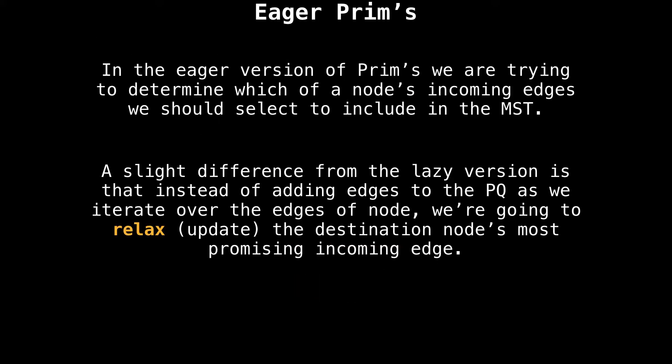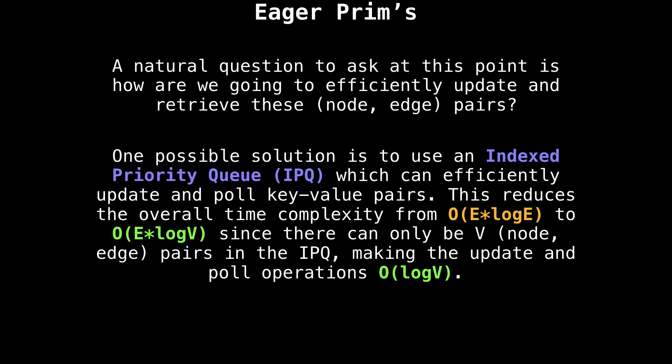In the eager version, we are trying to determine which of a node's incoming edges we should select to include in the MST. The main difference from the lazy version is that instead of adding edges to a priority queue as we iterate over the edges of a node, we're going to relax — that is, update — the destination node's most promising incoming edge. So how are we going to efficiently update and retrieve these node-edge pairs? One solution is to use an index priority queue, or IPQ for short, which can efficiently update and pull key-value pairs.